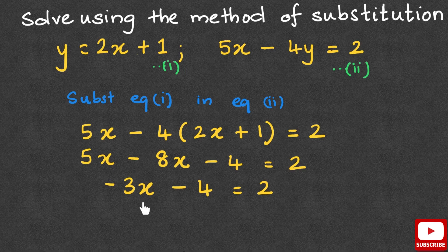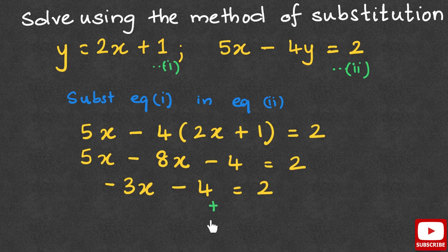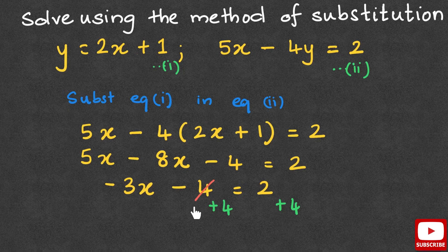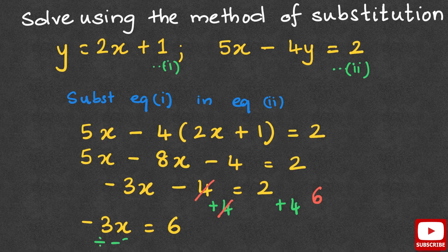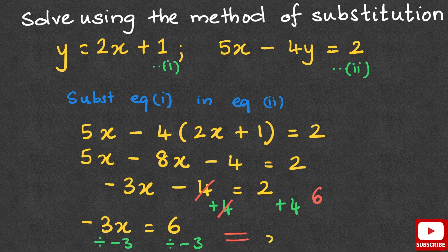Now to isolate x, we first add positive 4 on both sides. Negative 4 and positive 4 cancel out, and we have 6 on the right hand side. So we have negative 3x equals 6. Now to find the value of x, we divide both sides by negative 3, which gives us the value of x as negative 2.